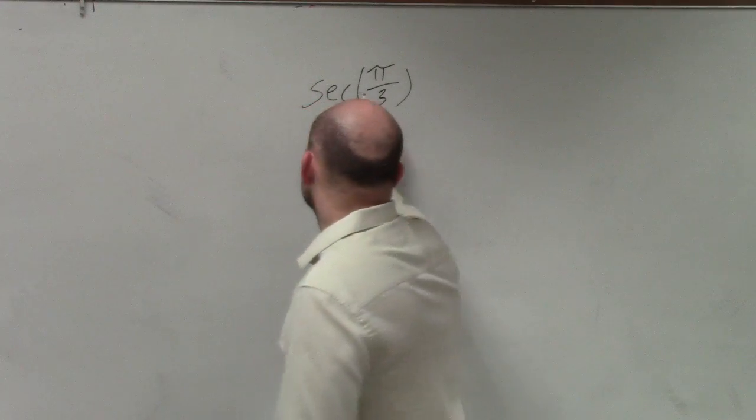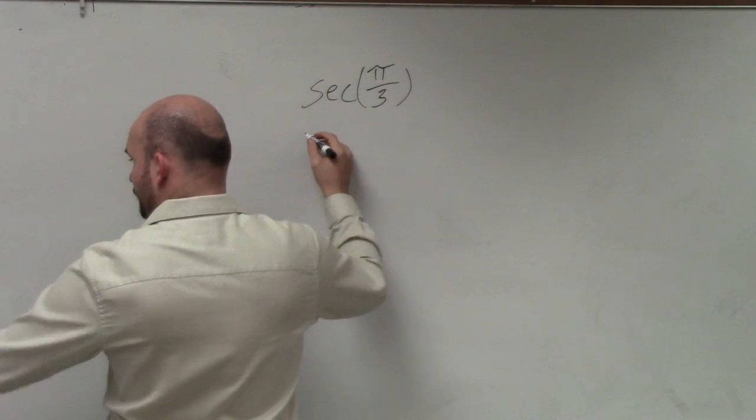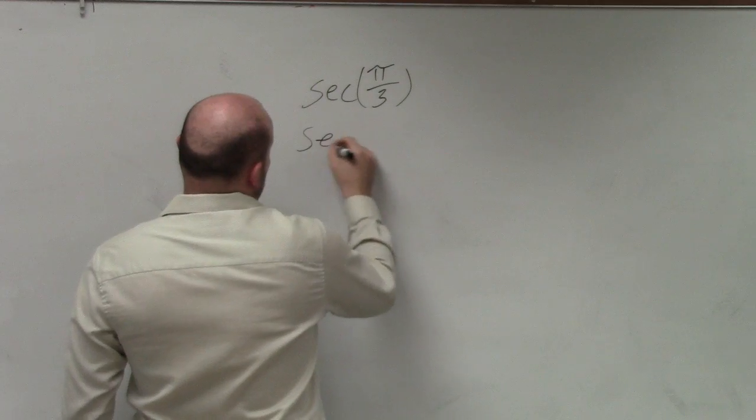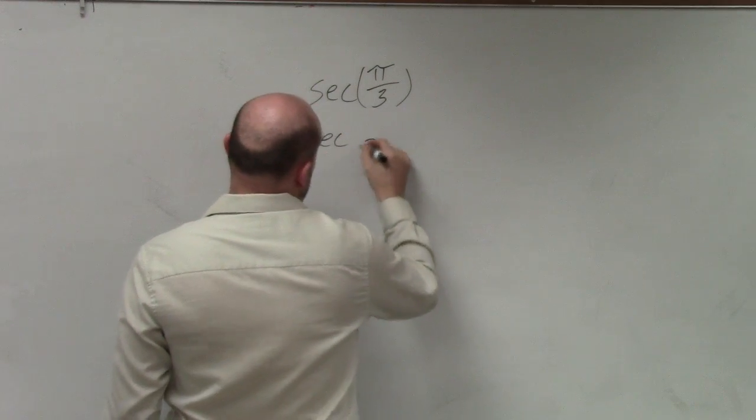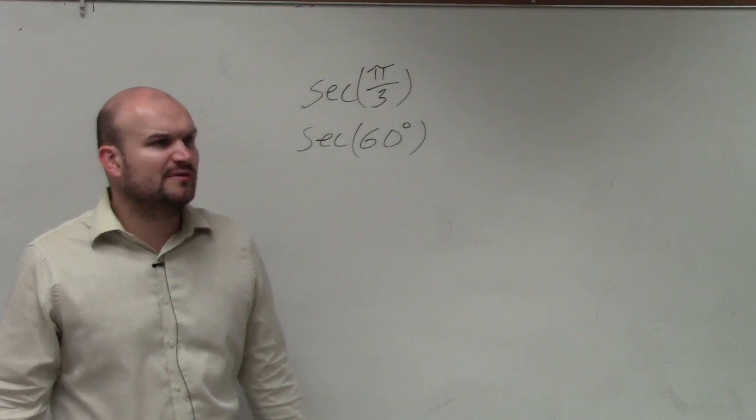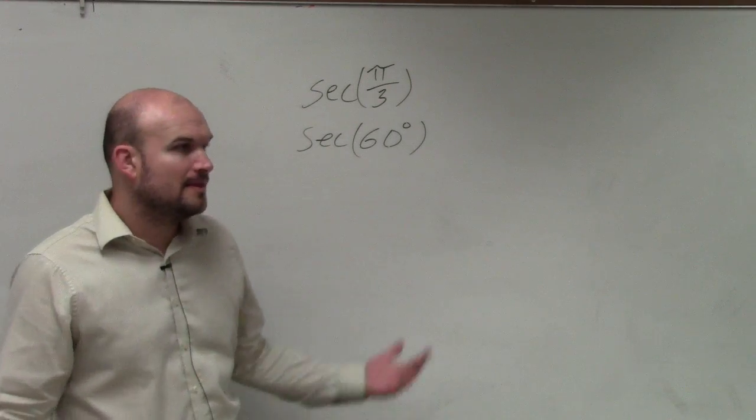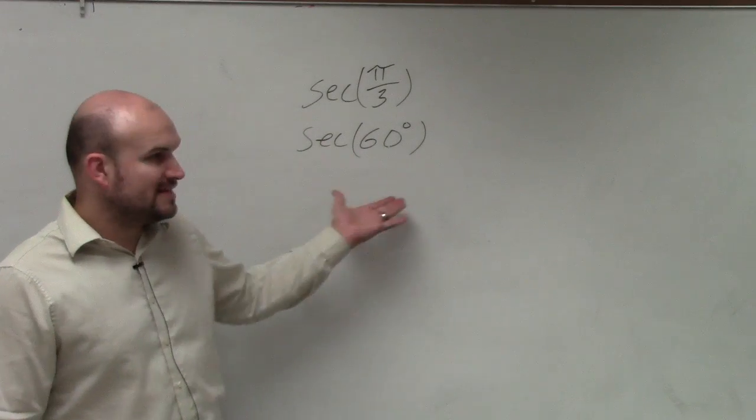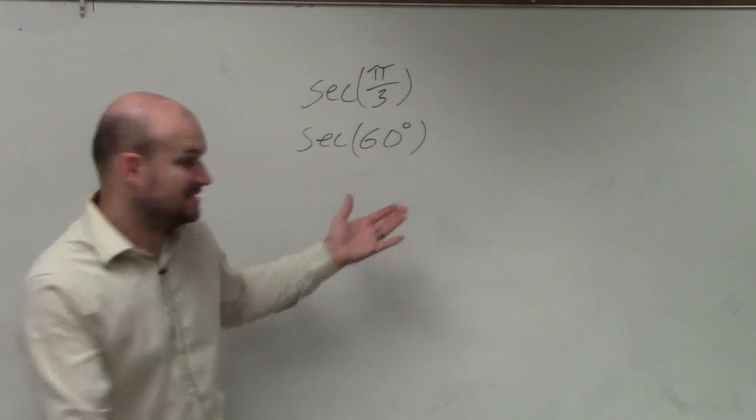So in reality, the secant of pi over 3, that is really equivalent to the secant of 60 degrees, right? It's really the equivalent to secant of 60 degrees. Now, we know that's the same thing as 1 over cosine of 60 degrees.